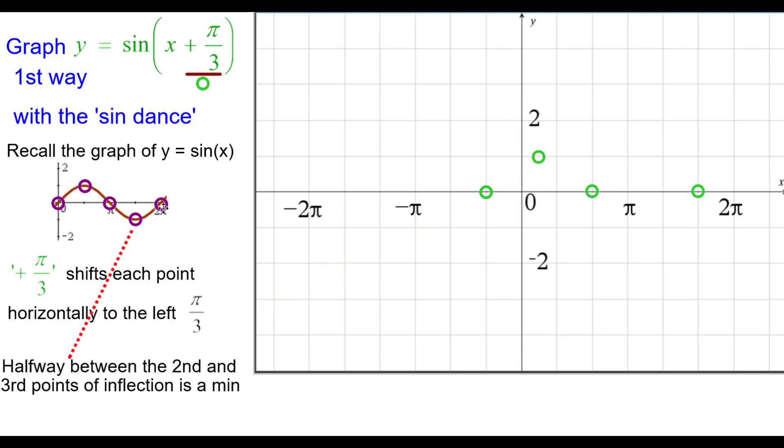And halfway between these two points of inflection is a minimum value and that's going to be at 7 pi over 6, negative 1. Pause as needed.